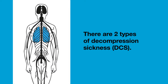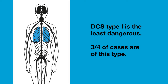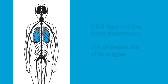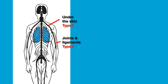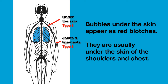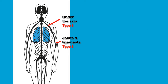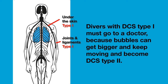Most cases of decompression sickness are not immediately life threatening. But in all cases of suspected decompression sickness, the diver must go to a doctor. There are two types of decompression sickness. Type 1 is the least dangerous, and three quarters of all cases are of this type. The bubbles are usually in the joints, ligaments, or underneath the skin. Bubbles under the skin appear as red blotches, most frequently on the shoulders and chest, and are itchy but not serious. If the bubbles are in a joint or ligament, they cause pain and make moving difficult. Divers with type 1 must see a doctor, as bubbles can grow and move, becoming type 2.